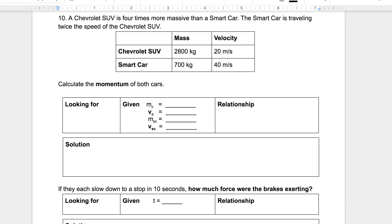So here's a basic one looking for the momentum of two cars. Something to notice, we have a Chevrolet SUV and a smart car. The Chevrolet SUV with a mass of 2,800 kilograms has four times the mass of the smart car. However, the smart car is going twice as fast. We know momentum has a direct relationship with mass and velocity. We would expect more mass to be more momentum and more velocity to be more momentum. But if the SUV has four times the mass and the smart car has twice the velocity, how much more momentum will the SUV have?